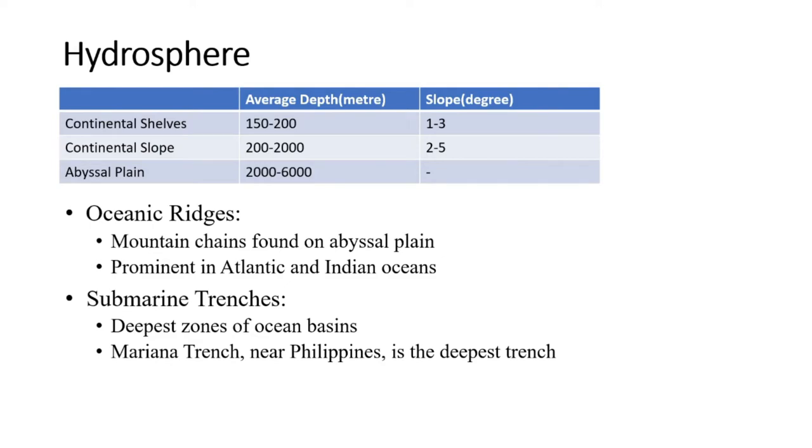Next relief feature is submarine trenches. These are the deepest zones of the ocean basin. The depth generally varies from 5,500 meters to 8,000 meters. These are tectonically formed and found in large numbers particularly in the Pacific Ocean. The Mariana Trench, the deepest trench, is found near Philippines having a depth of almost 11,000 meters.